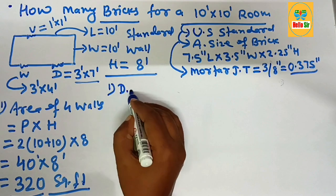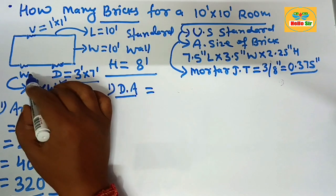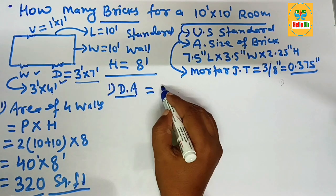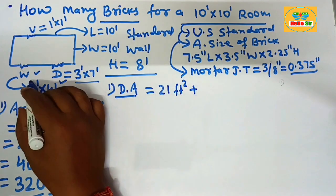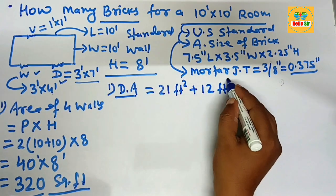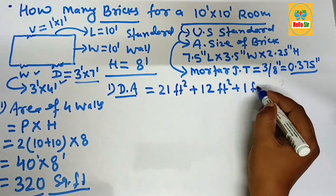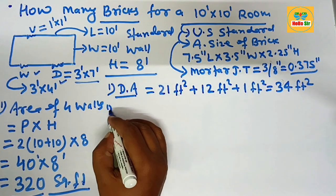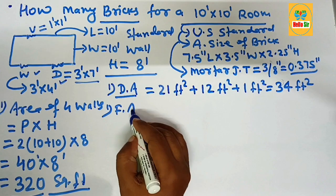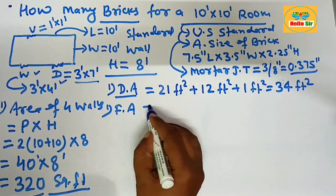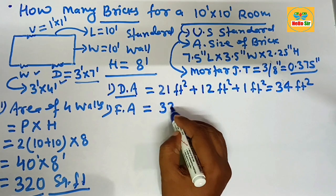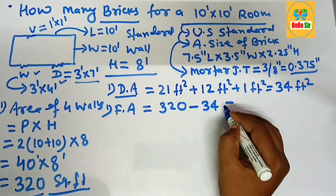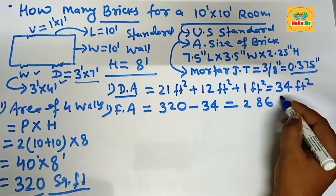Now calculate the deduction area — the area of the door, window, and vent which does not require brickwork. The area of the door is 3 multiplied by 7, that is 21 square feet. The area of the window is 12 square feet and the area of the vent is 1 square foot. Adding all these gives 34 square feet. So the final area of the 4 walls is 320 minus 34, which equals 286 square feet.